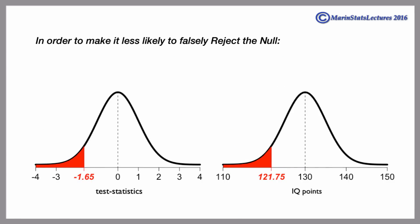If we want to be less likely to falsely reject the null, we would use a smaller value for the significance level, and hence, a cutoff that is further from the null.